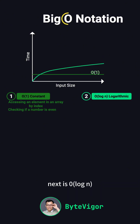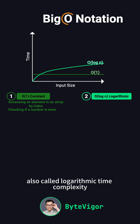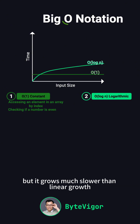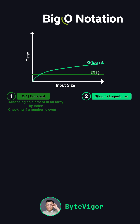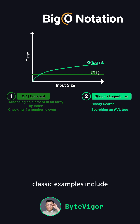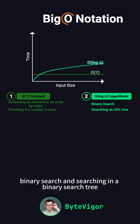Next is O(log n), also called logarithmic time complexity. This means that the algorithm's execution time grows logarithmically as the input size increases, but it grows much slower than linear growth. You'll often see this in divide-and-conquer algorithms. Classic examples include binary search and searching in a binary search tree.